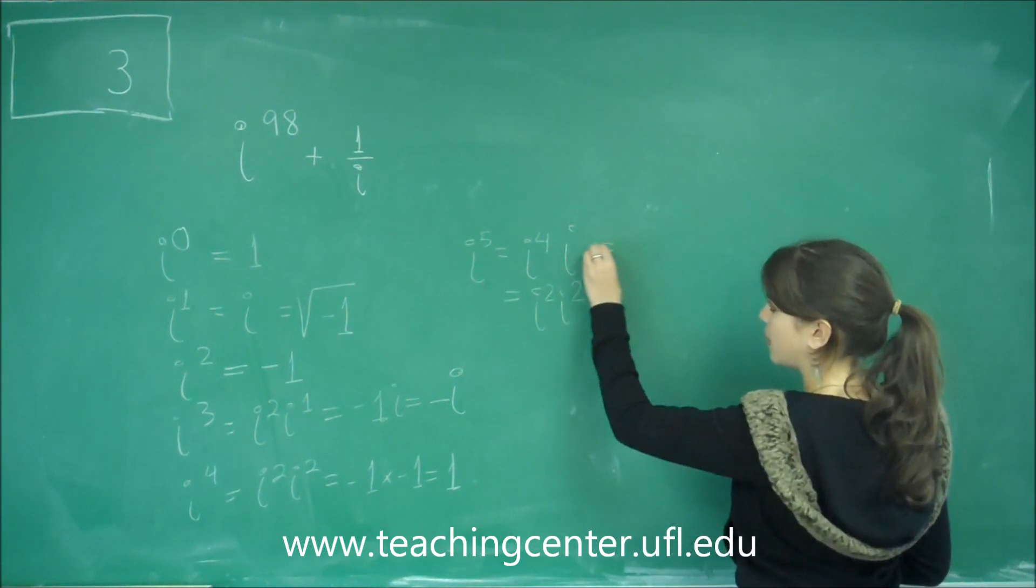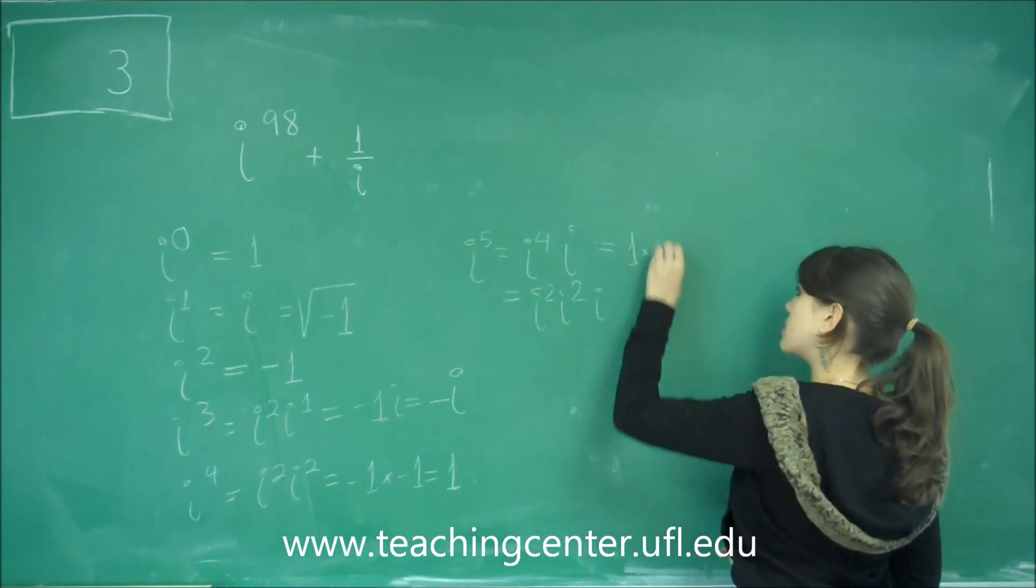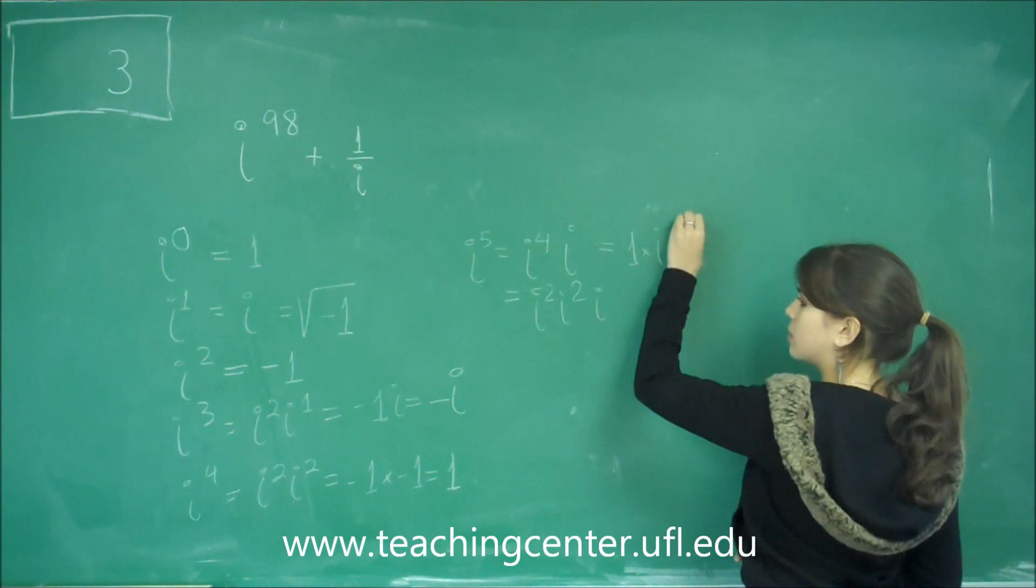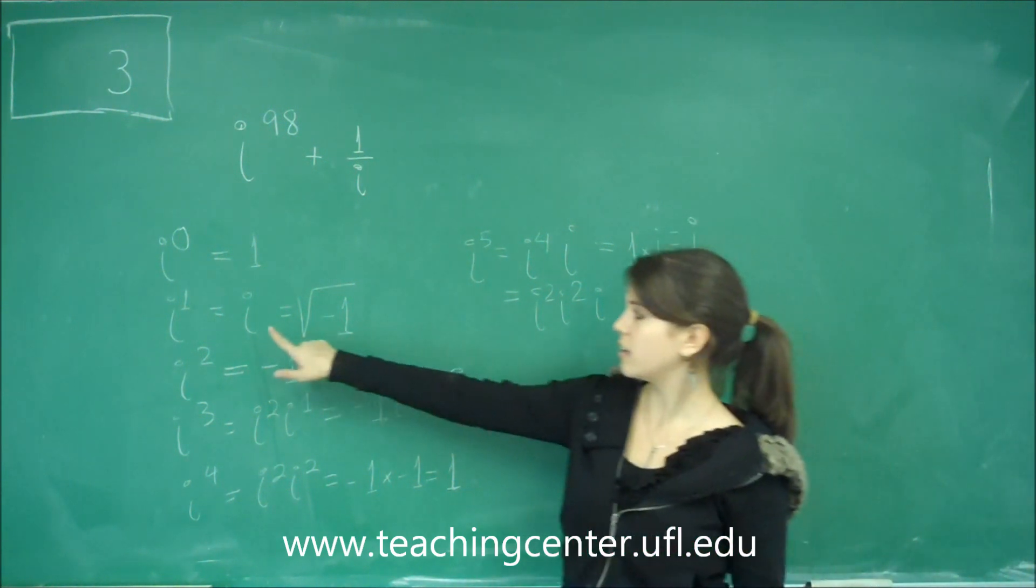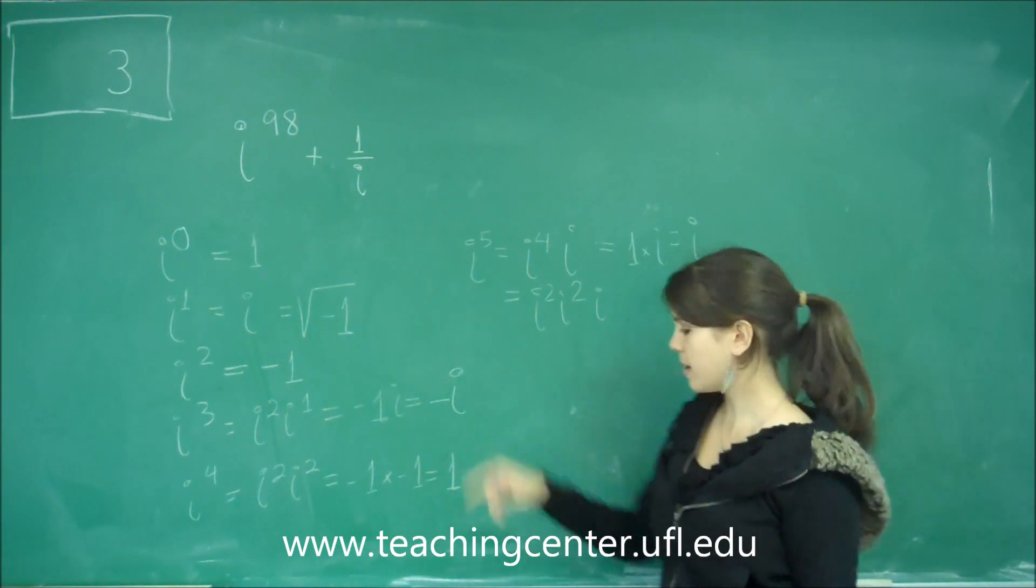So let's do it this way. So i to the 4th, we said here that it was 1 times i. So this would give me just i. Like I said, to the 5th should be here, right after 4. So it's a repeating pattern.